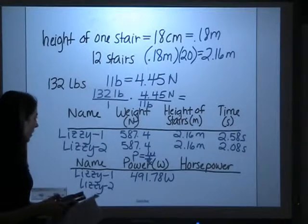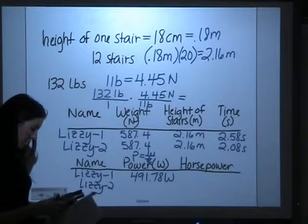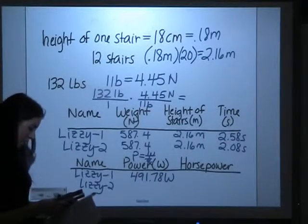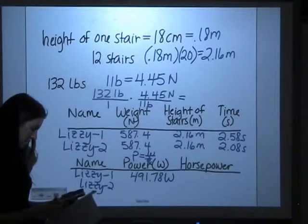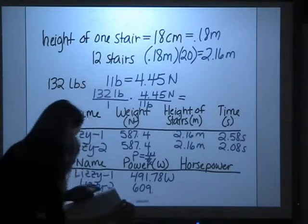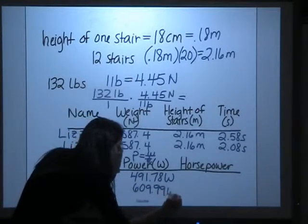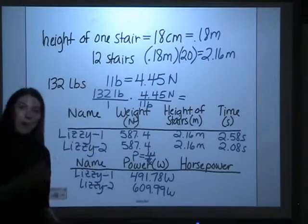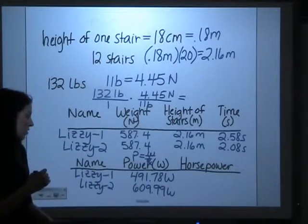Let's do the same thing with her second trial. 587.4 times 2.16 divided by 2.08 gives her power of 609.99 watts. So you can see how much more her power improved on her second trial.